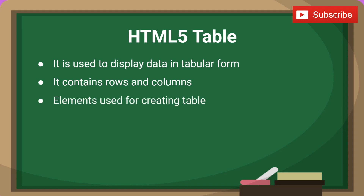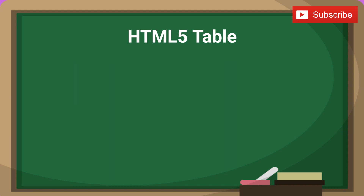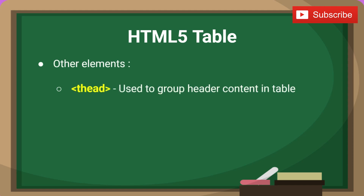The first element is table, second is tr, third is td, and fourth is th. tr defines a table row, td defines table data, and th defines a table header. Along with these, we have some more elements in HTML5 table.